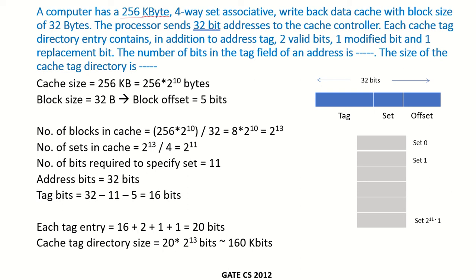A computer has a 256 kilobyte four-way set-associative write-back data cache with a block size of 32 bytes. This is a set-associative cache, so we will have several sets in the cache, and each set consists of four blocks because this is a four-way set-associative. So set 0 will have block 0, block 1, block 2, and block 3. Similarly, set 1 would also have four blocks, and so on.